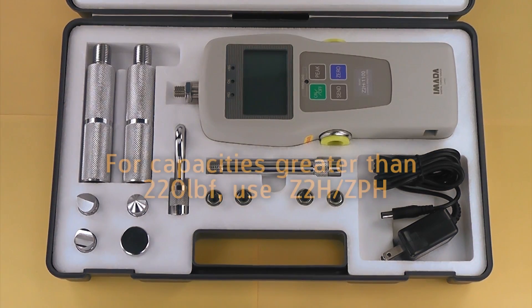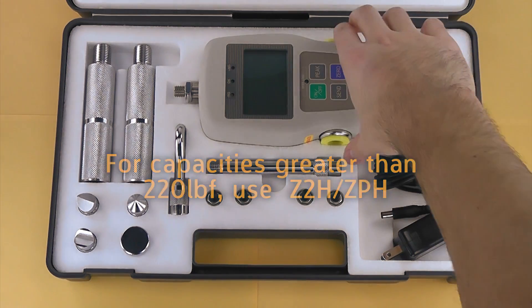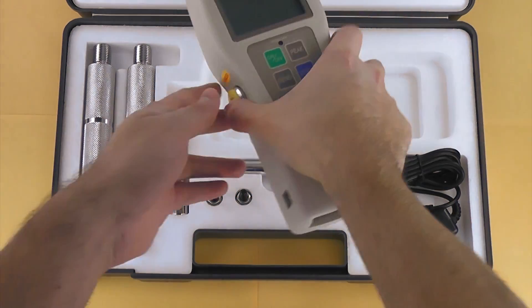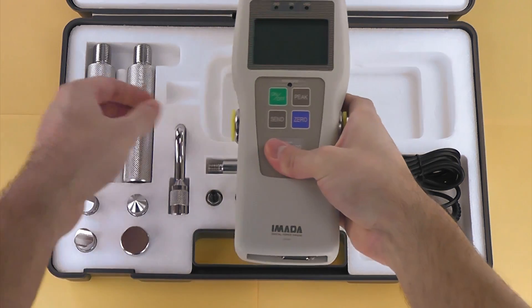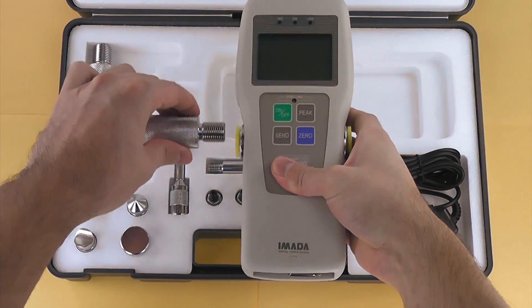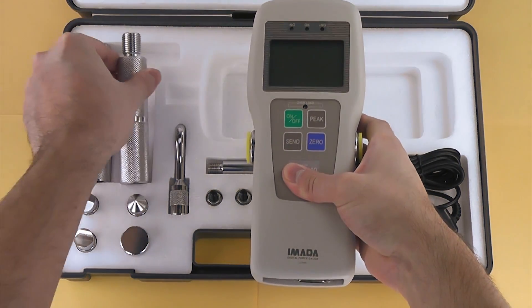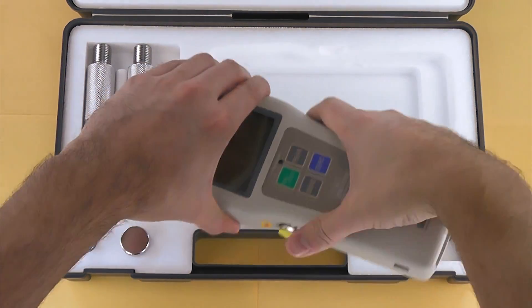For capacities over 220 pounds force, use ZPH or Z2H series force gauges. The Z2H and ZPH force gauge kits include a set of detachable handles.